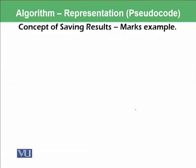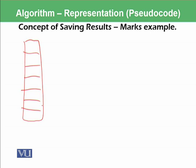We will start with a very basic introduction of how to represent the concept of saving results using pseudocode. You must remember our computer architecture lectures where we represent RAM like this and we said that every cell in the RAM has an address. For example, this has 00, 01, 02, 03, 04 and so on.